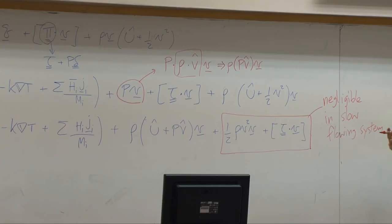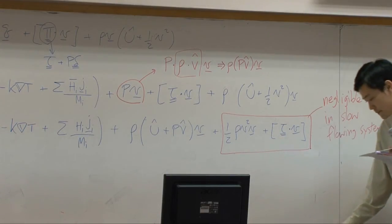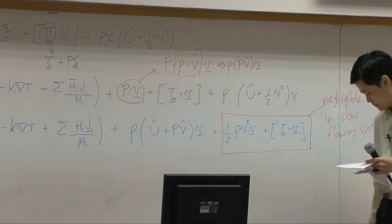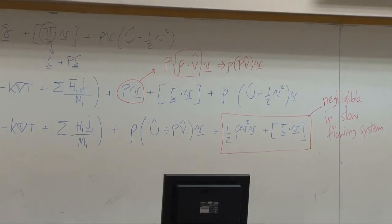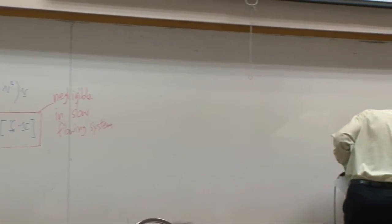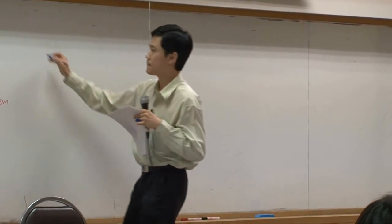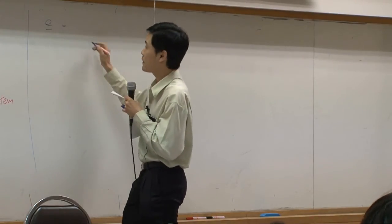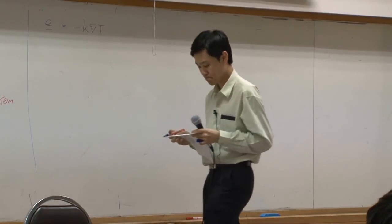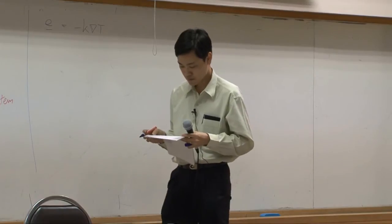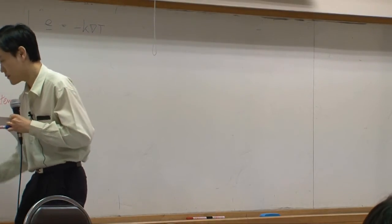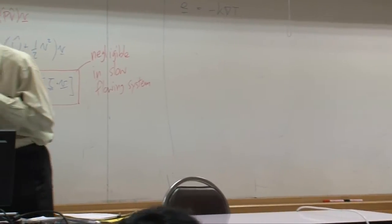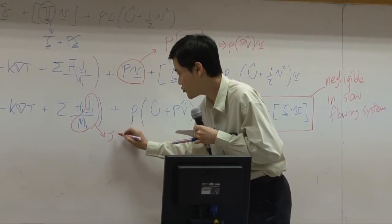So for our simplicity, we will drop this term. The first term remains the same, k del t. The second term, I'm going to define, I'm going to combine this together and call this one capital J_i.